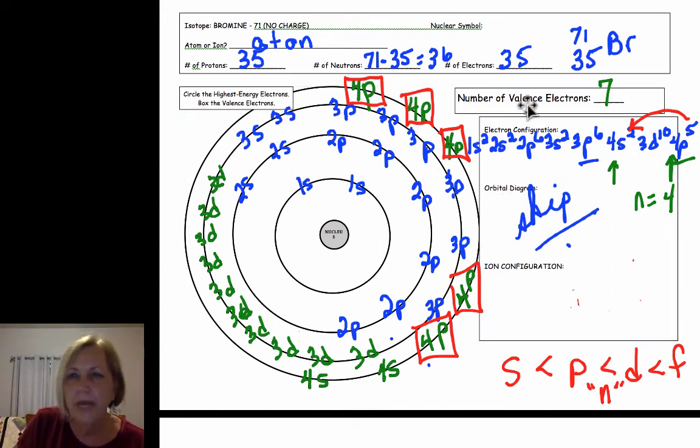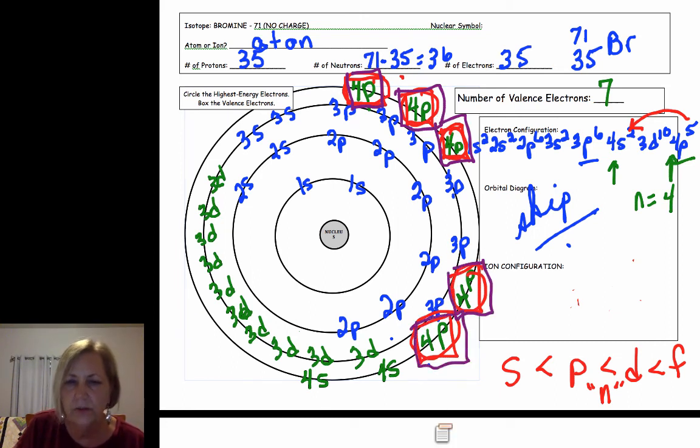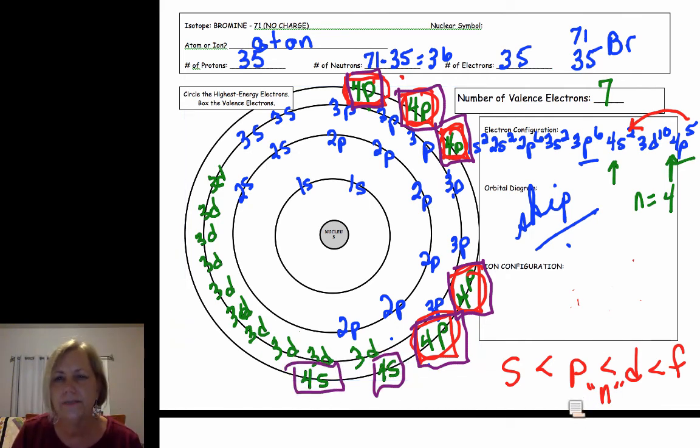I'm going to make those circles there, and now it says box the valence electrons, and that is also the 4p that they're circled and boxed. They coincide, they won't always but they do in this case, and I include the 4s's as those valence electrons. Now non-metals are winners and they'll gain electrons, and so bromine is going to gain one electron to be just like the next noble gas.